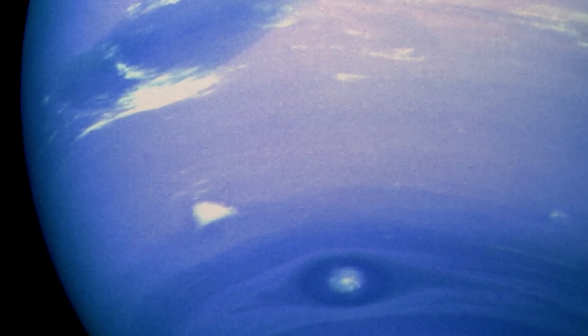Surprisingly, there is more than one large dark spot on Neptune. There is a second dark spot, and according to scientists, this must have separated from the main storm.